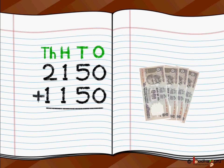And now we need to add the two numbers because we want to find out how much total money he has now. He had 2150 previously and this month he saved 1150. So how do we do it?